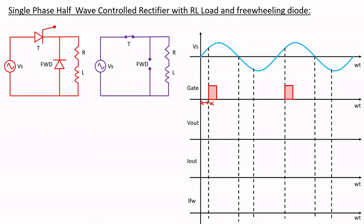Let us consider the circuit diagram again. The source voltage waveform Vs is positive, meaning Vs will have polarity plus and minus — positive appearing at the anode and negative at the other point. Since we have applied a gate pulse at this instant, the SCR will be in forward conduction mode, acting as a short circuit. Since negative is connected to the anode of the freewheeling diode, it is acting as an open circuit, and there will be no flow of current through that path.